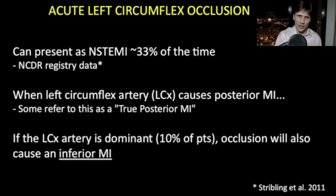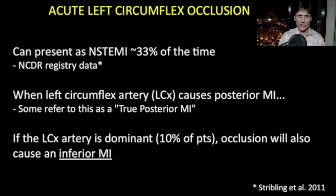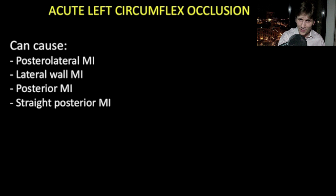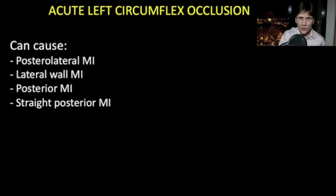Some nomenclature: some people say that a 'true posterior MI' happens only when the left circumflex is occluded. Remember, several arteries can cause a posterior MI, and it's most often seen with an inferior MI caused by occlusion of the right coronary artery — but these aren't 'true posterior MIs.' Posterolateral MI, lateral wall MI, posterior MI, and straight posterior MI are all various ways that an acute thrombosis of the left circumflex artery can present.